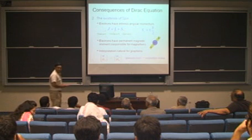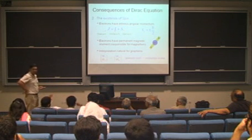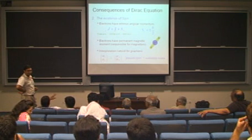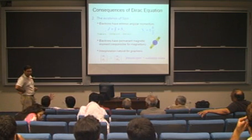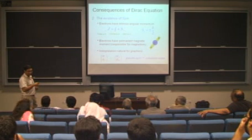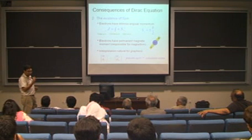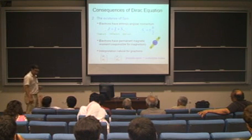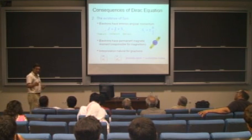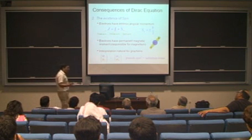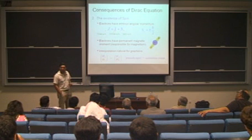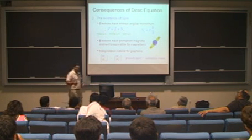When we say two valleys, on the dispersion relation, we drive it for a single valley. There are two inequivalent Dirac points — inequivalent in the sense that all the rest of the Dirac points are related to these two Dirac points, K and K prime.